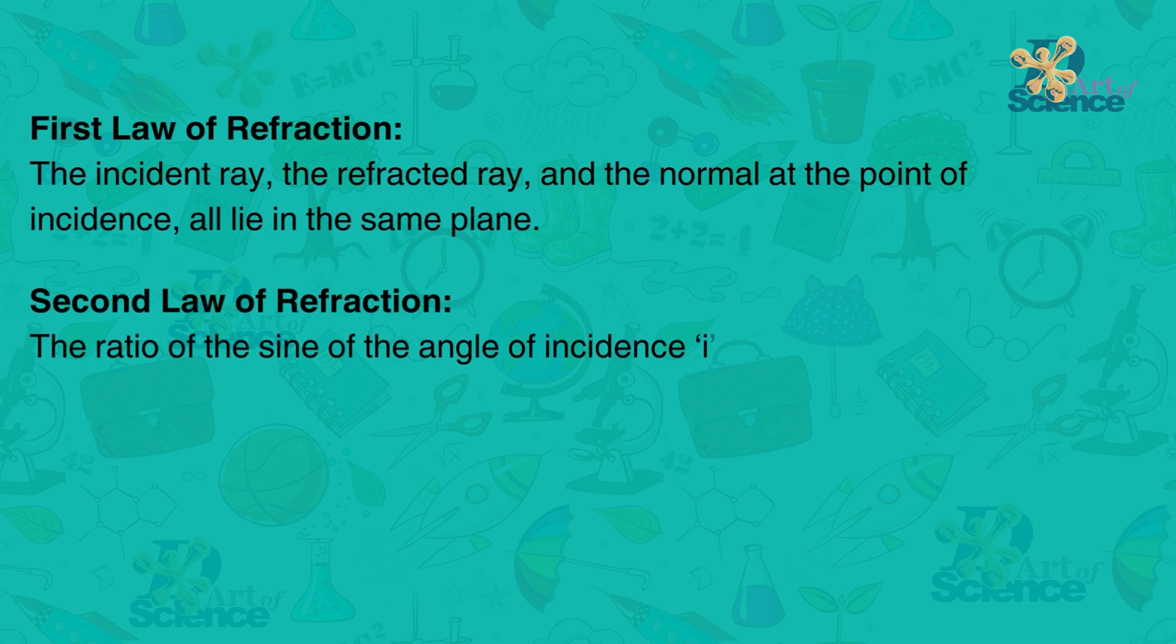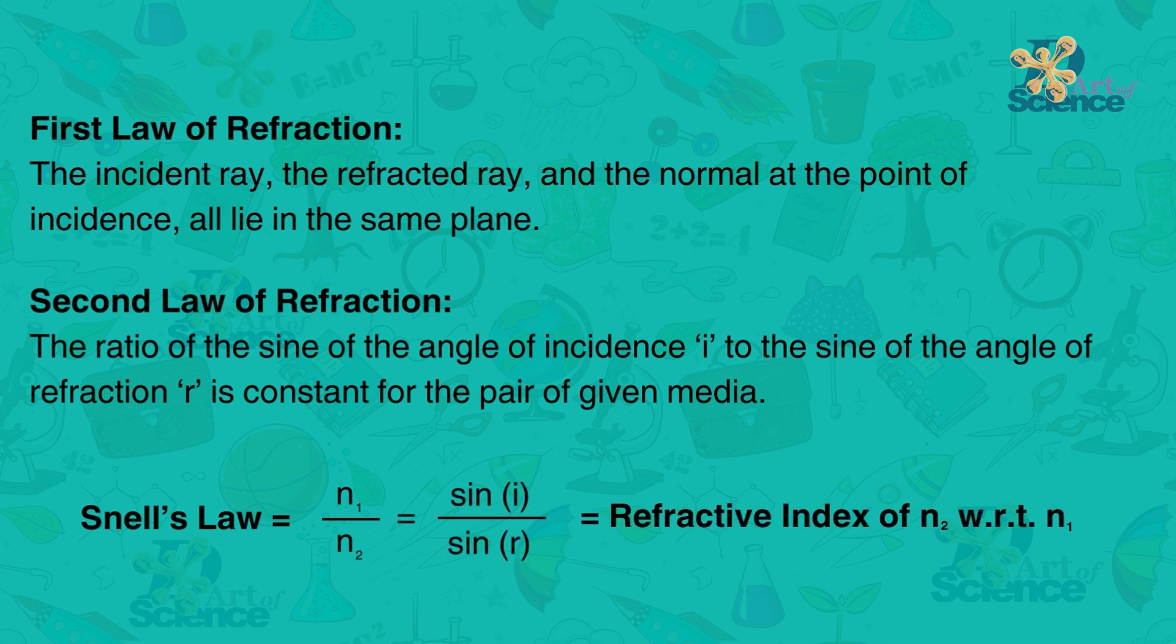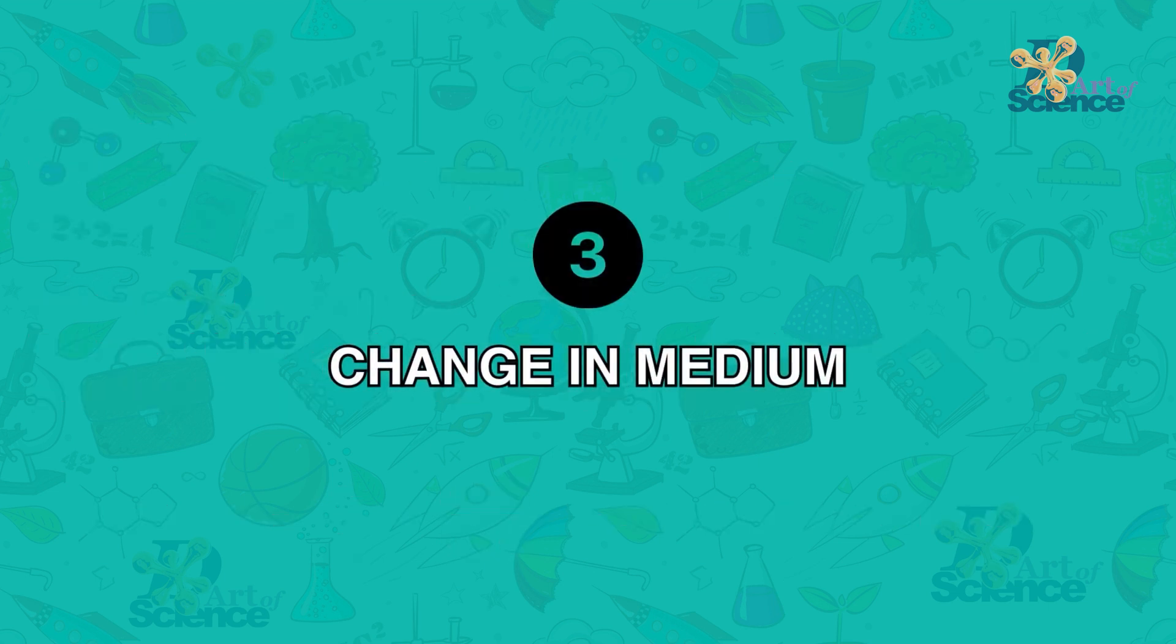The second one is that the ratio of sine of the angle of incidence to the sine of the angle of refraction is constant for a pair of given media. This constant is called the refractive index of the second medium with respect to the first one.